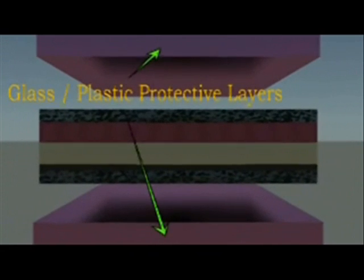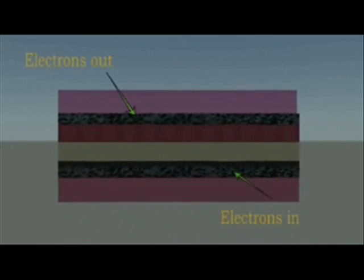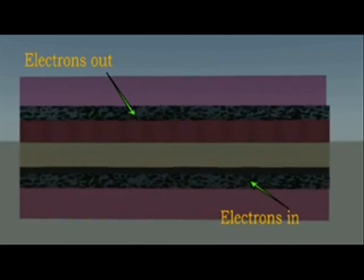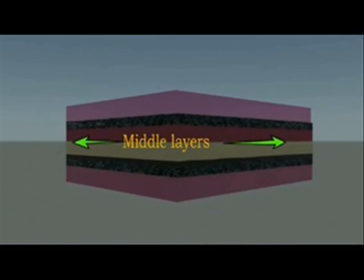The top and bottom layers are protective glass with conducting coatings. Electricity in the form of electrons flows in and out of these conductive coatings while the electrical production process happens in the middle layers.